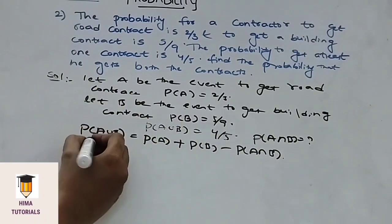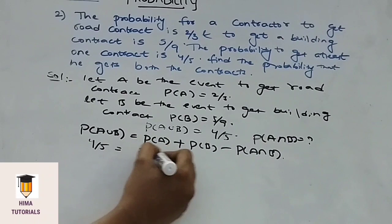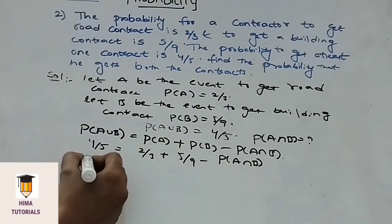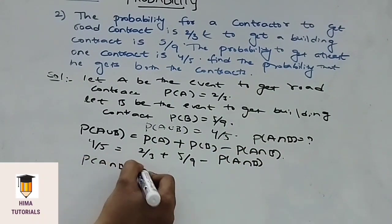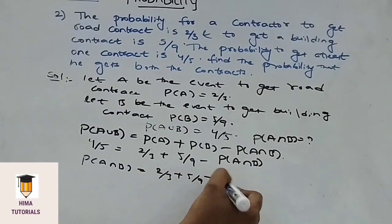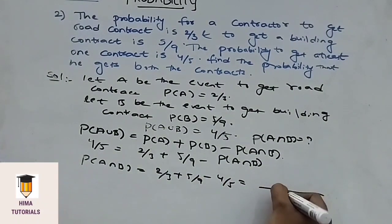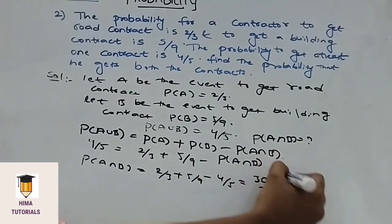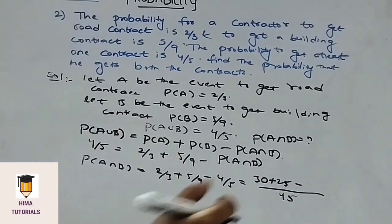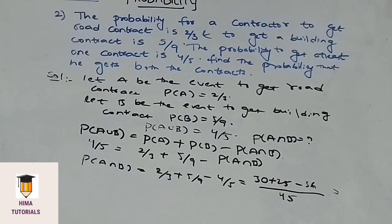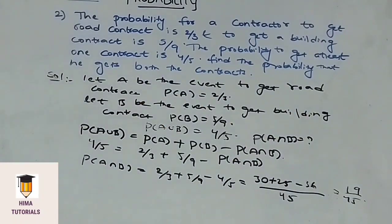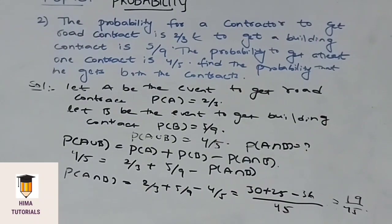Using the formula P of A union B equals P of A plus P of B minus P of A intersection B: 4 by 5 equals 2 by 3 plus 5 by 9 minus P of A intersection B. So P of A intersection B equals 2 by 3 plus 5 by 9 minus 4 by 5. Taking LCM as 45: 30 plus 25 minus 36, that is 55 minus 36, which is 19 by 45. The probability that he gets both contracts is 19 by 45. I hope it is clear. Please make a note of it.